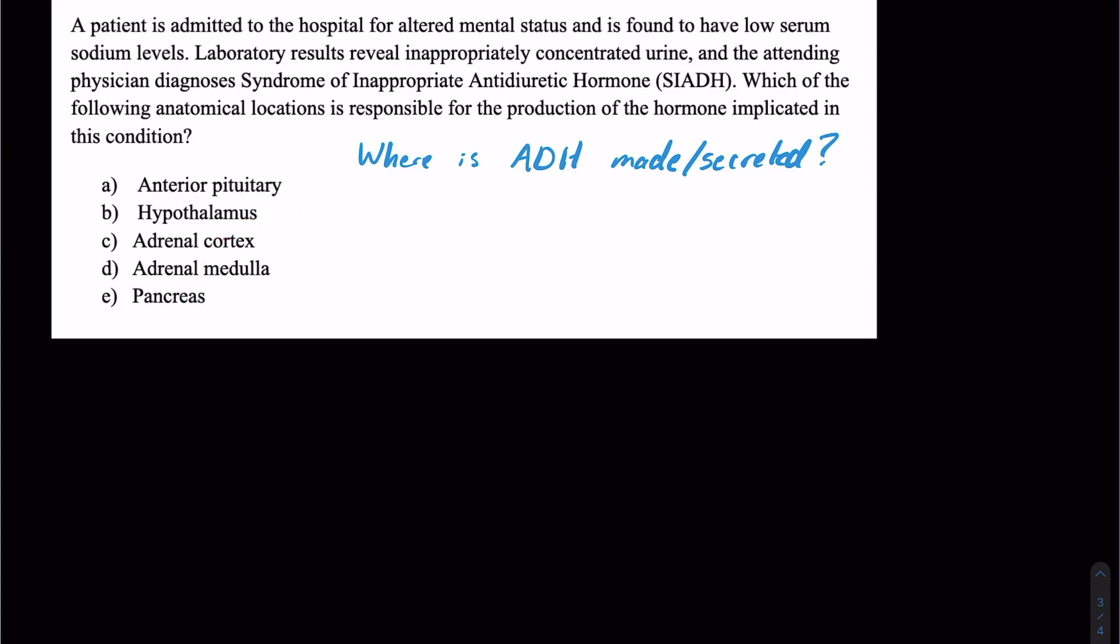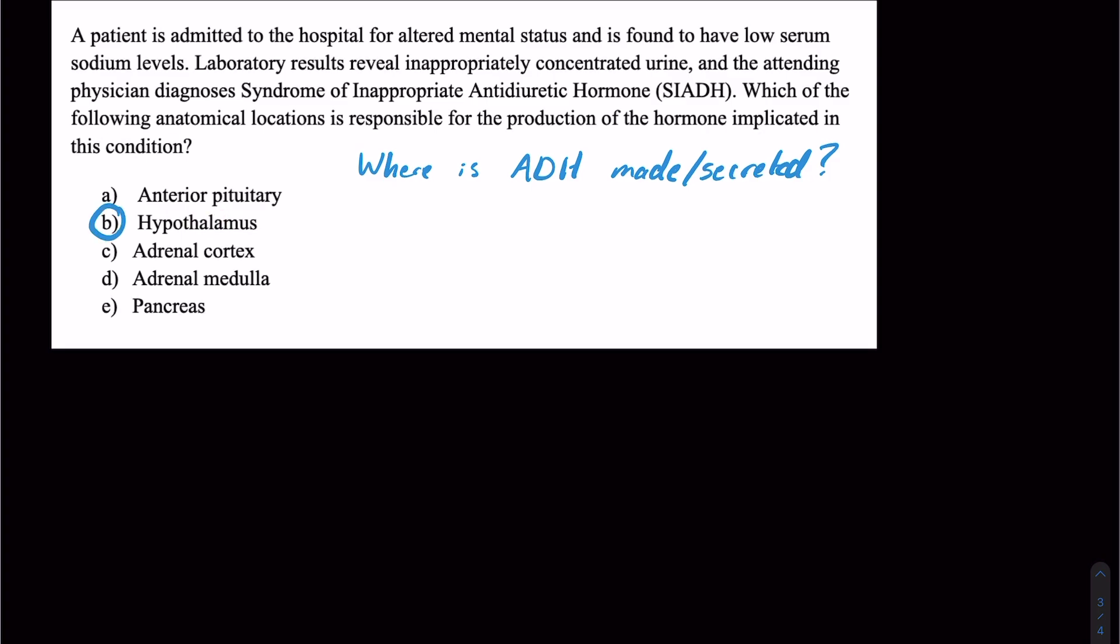So don't make it harder than it has to be. And you might be looking for the posterior pituitary here, and notice you don't see it. So then we have to look for our next best answer. And that's really going to be the hypothalamus. Because remember, the hypothalamus directly connects to that posterior pituitary through that neuron. So it's going to be made in the neuron, and that axon of the neuron is going to travel down to the posterior pituitary.